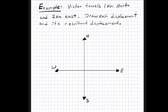So let's look at this example. Victor travels one kilometer to the north and two kilometers to the east. Draw each displacement and its resultant displacement. So how do we start? First, we have to know from where Victor starts to travel. We're going to say that Victor starts to travel from the center of the cross.